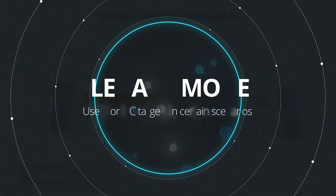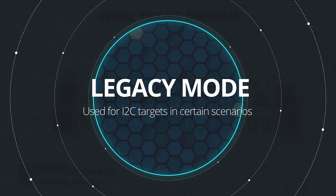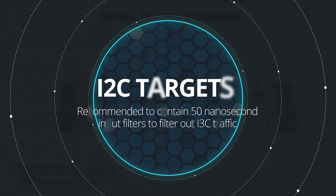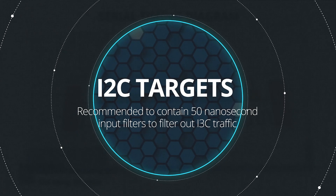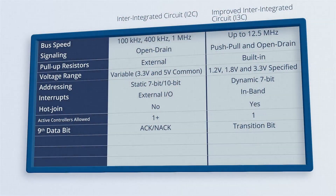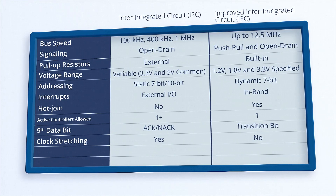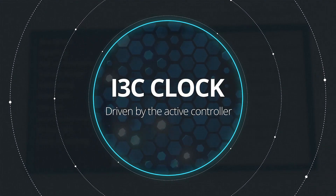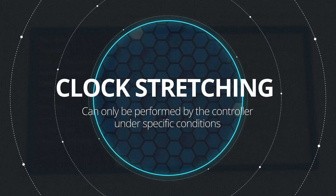Since i3C is very similarly structured to i2C, it can operate in a legacy mode for i2C targets in certain scenarios. Any i2C targets on the bus must use 7-bit addressing without clock stretching, and it is recommended that i2C targets contain 50-nanosecond input filters to filter out i3C traffic. Another crucial change with i3C is that clock stretching is typically not used. i2C uses clock stretching to give target devices more time to process before returning data, but with i3C, the clock is only driven by the active controller, meaning clock stretching can only be performed by the controller under specific conditions.